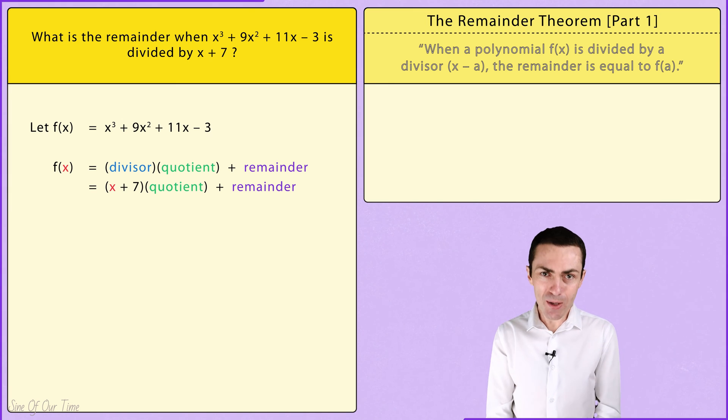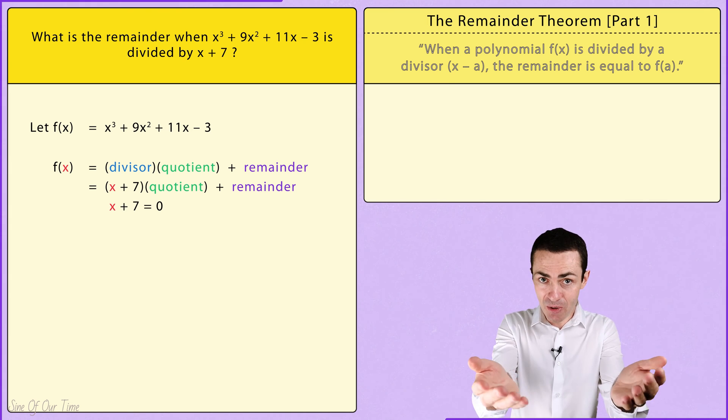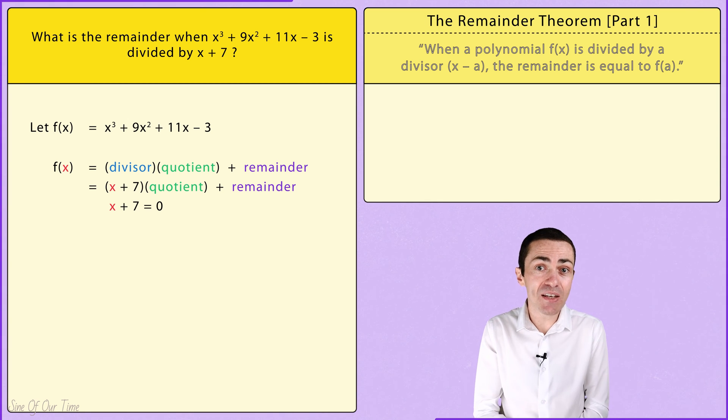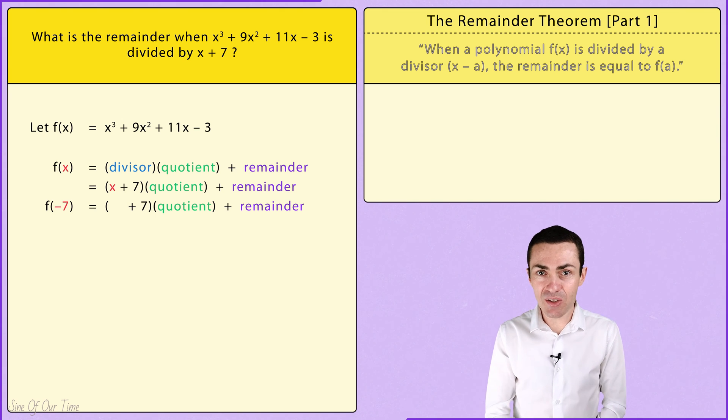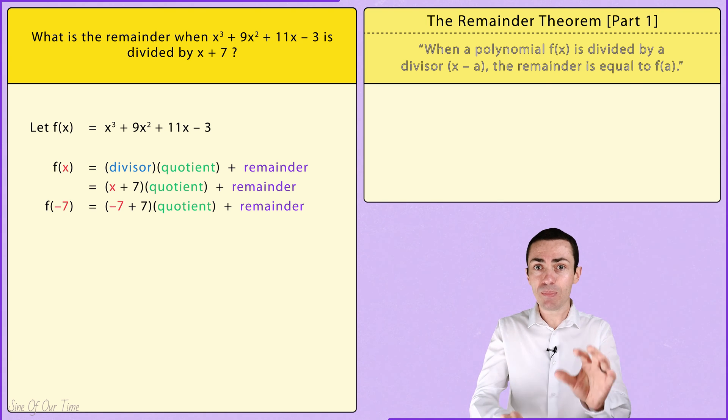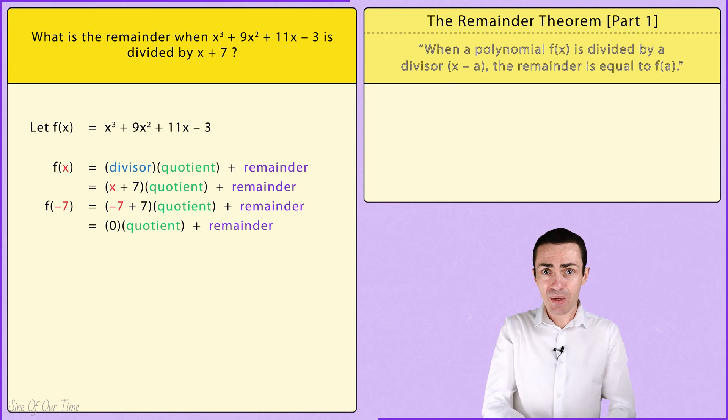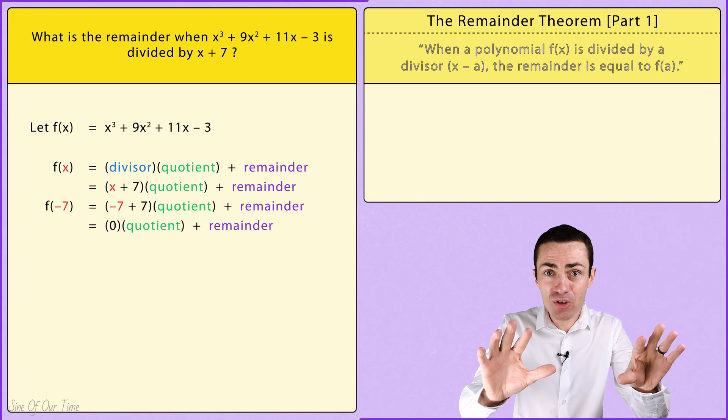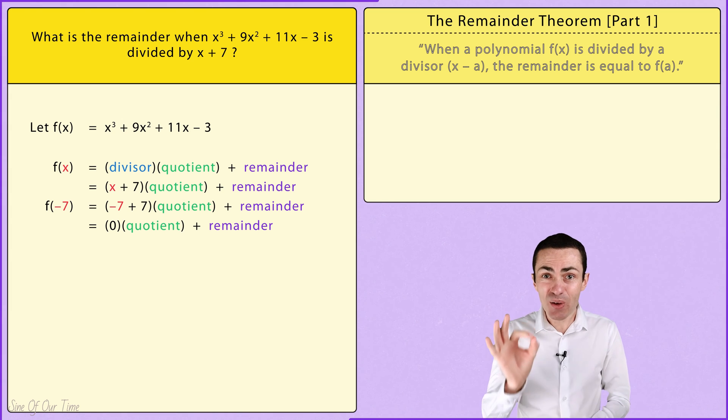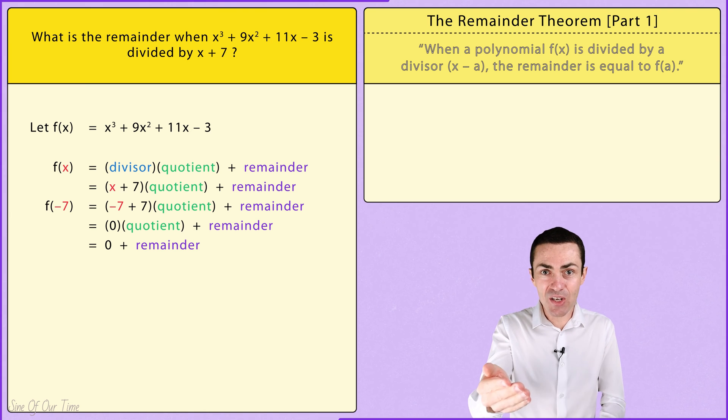The remainder theorem says that when we substitute the value of x that makes the divisor equal to zero, then we will get the remainder. In this example, the value of x that makes the divisor equal to zero is negative 7. So we need to work with f(-7), which means that wherever we see x's, we need to replace those with negative 7s. And when we do this, we note that the divisor is -7 + 7, which ultimately leaves us with zero. But now we have a case of zero multiplied by the quotient. And regardless of what the quotient is, zero multiplied by that quotient still leaves us with zero. Ultimately, we are left with zero plus the remainder, which of course is just that remainder.